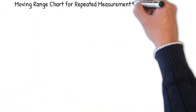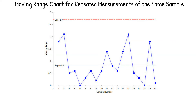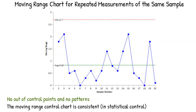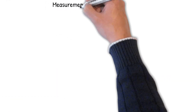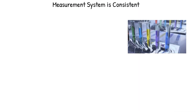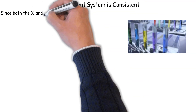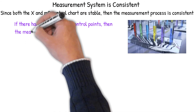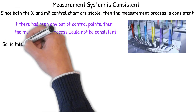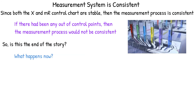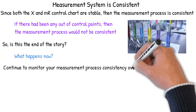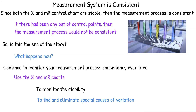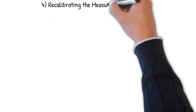Now let's look at the moving range chart. Here's the moving range chart with the points plotted, the average, and the upper control limit. There are no out-of-control points and no patterns, so the moving range control chart is consistent — it's in statistical control. Since both the X and moving range charts are stable, the measurement process is consistent. If there had been any out-of-control points, the measurement process would not be consistent. You should continue to monitor your measurement process over time using the individuals chart, monitoring stability and finding and eliminating any special causes of variation that occur.